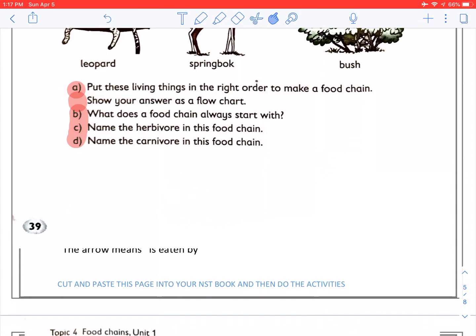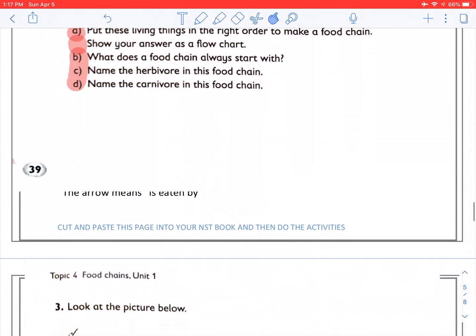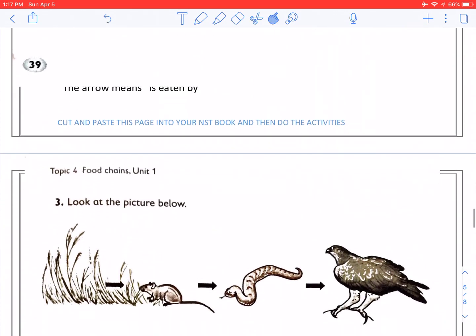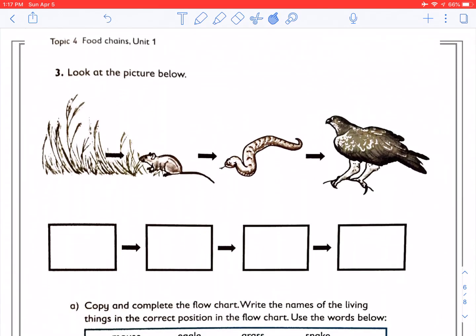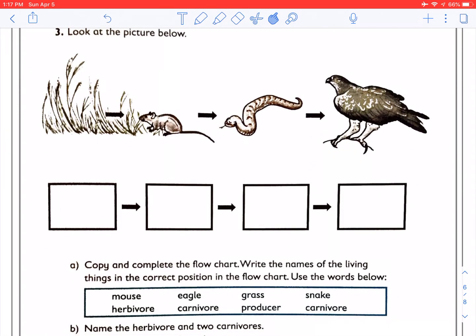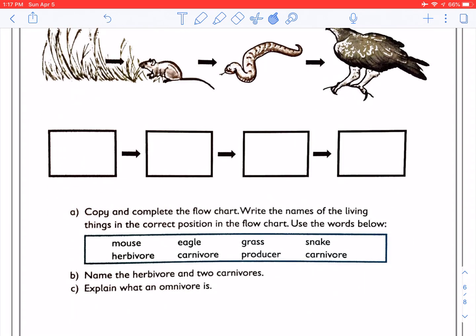Let's go on to page 40. You've got an activity there. That is a flow chart. So all you need to do there is fill in the living things in the correct order. Copy and complete the flow chart. Write the names of the living things in the correct position in the flow chart and use the words below. So you are first going to put in the living things, and under that you're going to say whether it is a producer, a herbivore, or a carnivore. Then we're also going to write this in. You're going to name the herbivore and two carnivores, and you are also going to explain what an omnivore is.